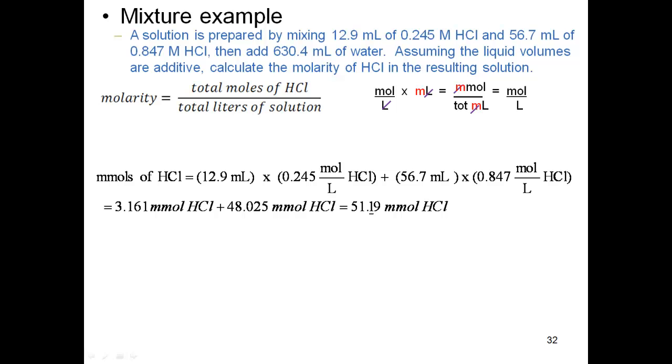Now I've got to go by addition rule. That would mean then my sig figs is going to be in the tens place, which gets me 51.19 millimoles of HCl where my sig fig is on that 1, the tens place. So that's really 3 sig figs - the 9 is just a guard digit.